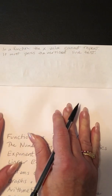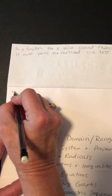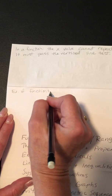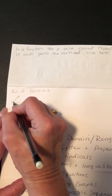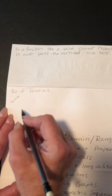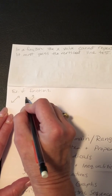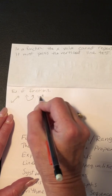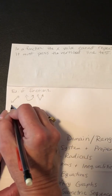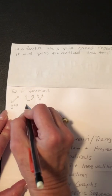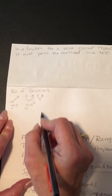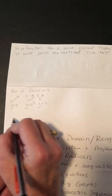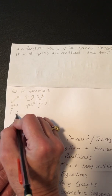Let's do some examples of things that are functions. All straight lines except vertical lines are functions. Parabolas that open up or down are functions. Absolute value V's that open up or down are functions. So something like y equals x is a function, y equals x squared is a function, y equals the absolute value of x is a function.